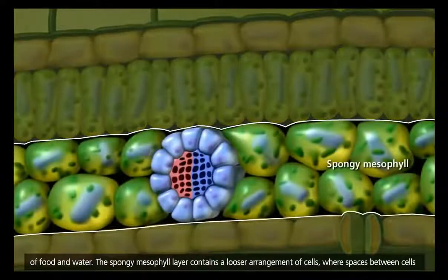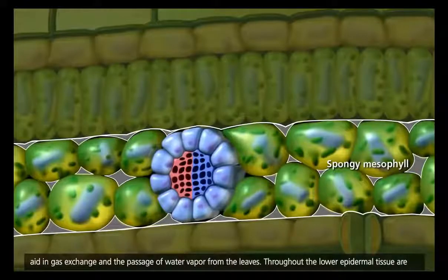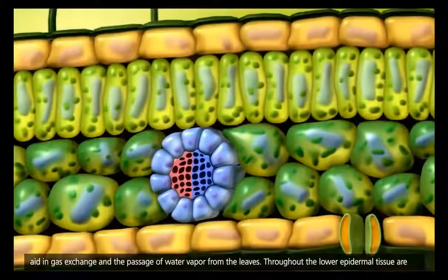The spongy mesophyll layer contains a looser arrangement of cells, where spaces between cells aid in gas exchange and the passage of water vapor from the leaves.